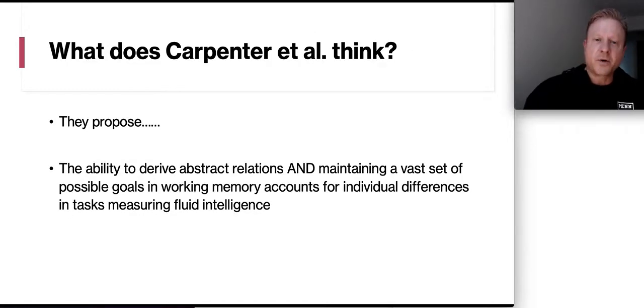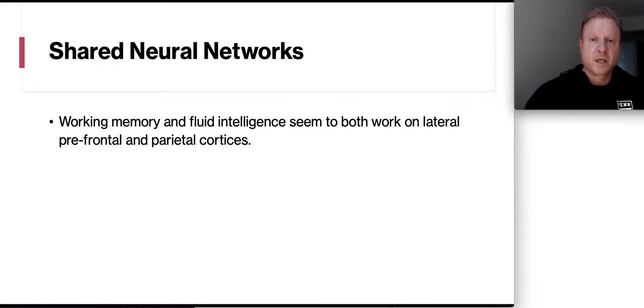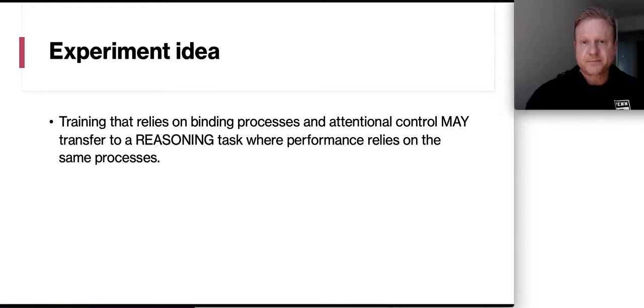Now, Carpenter et al., they're proposing that the ability to derive abstract relations and maintaining a vast set of possible goals on working memory accounts for those individual differences in task-measuring fluid intelligence, which basically means this is why some people are smarter than others. Now, they also think that there's a shared neural network going on. Working memory and fluid intelligence seem to work both on that lateral prefrontal and parietal cortices. So here's the experiment idea. Training that relies on binding processes and attentional control may transfer to a reasoning task where performance relies on the same processes.